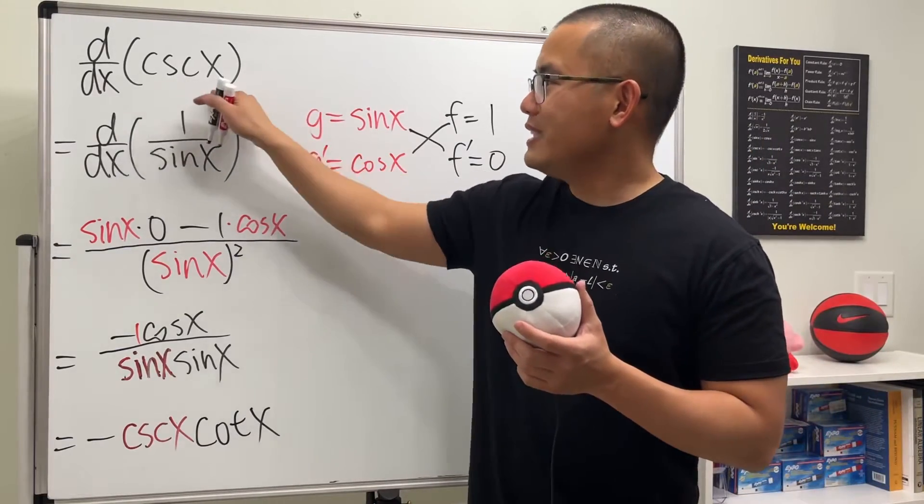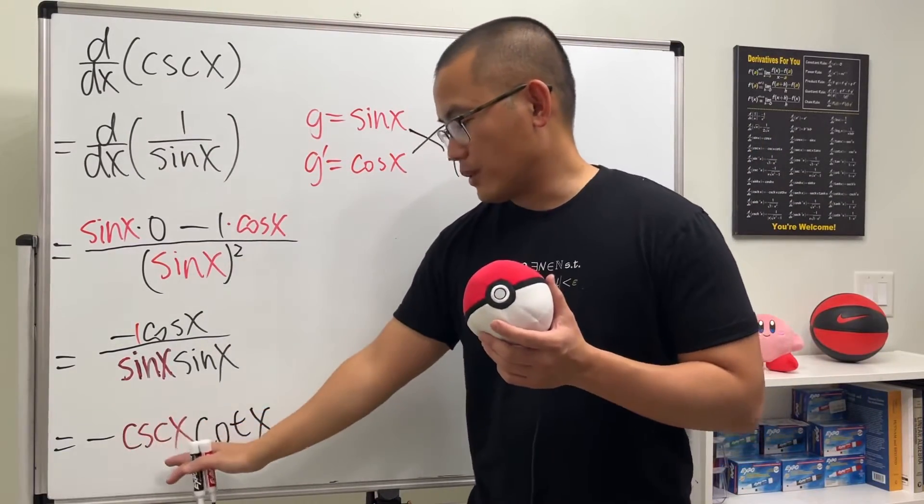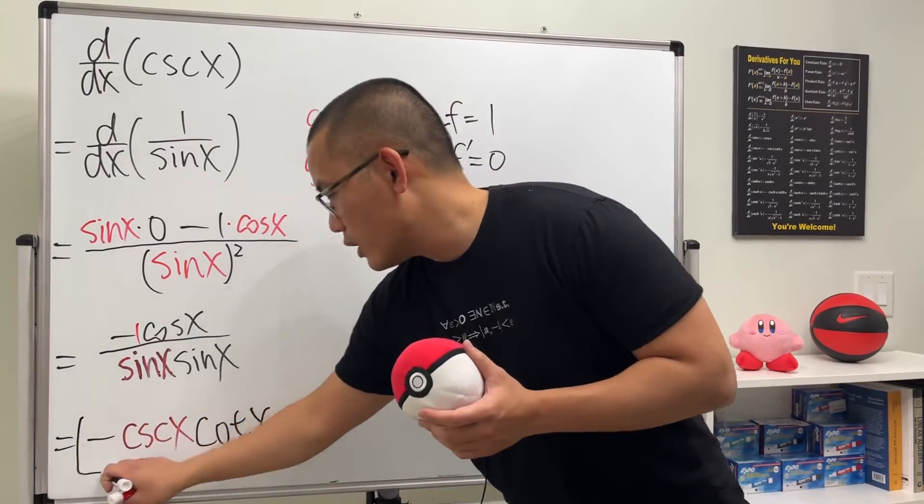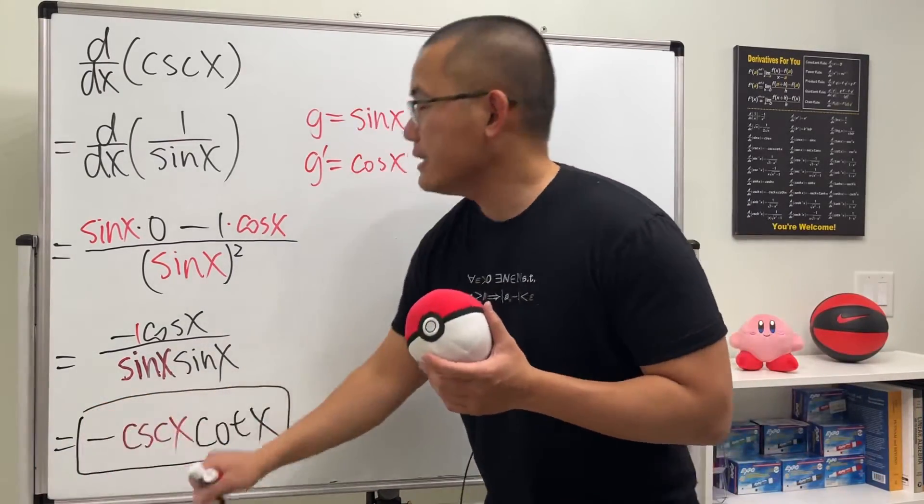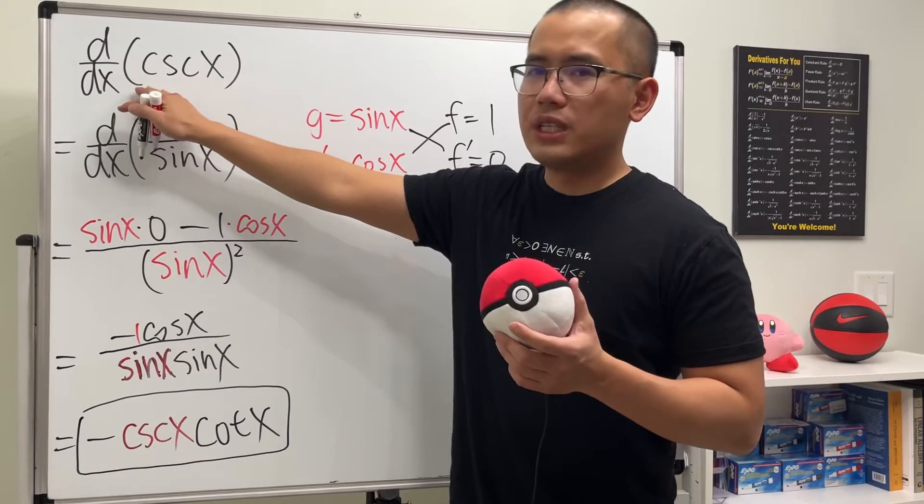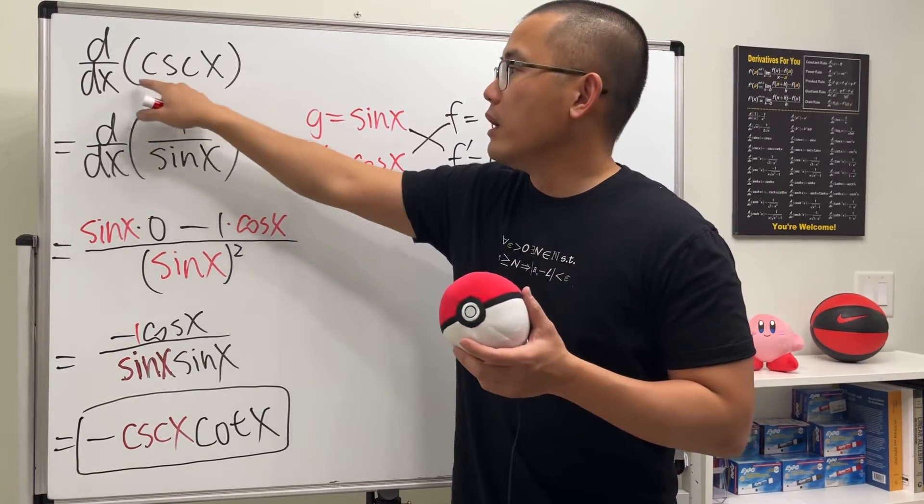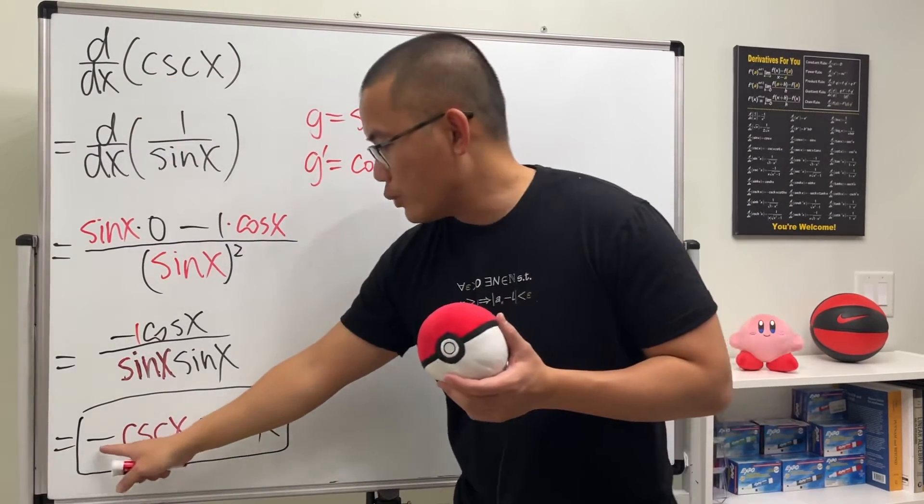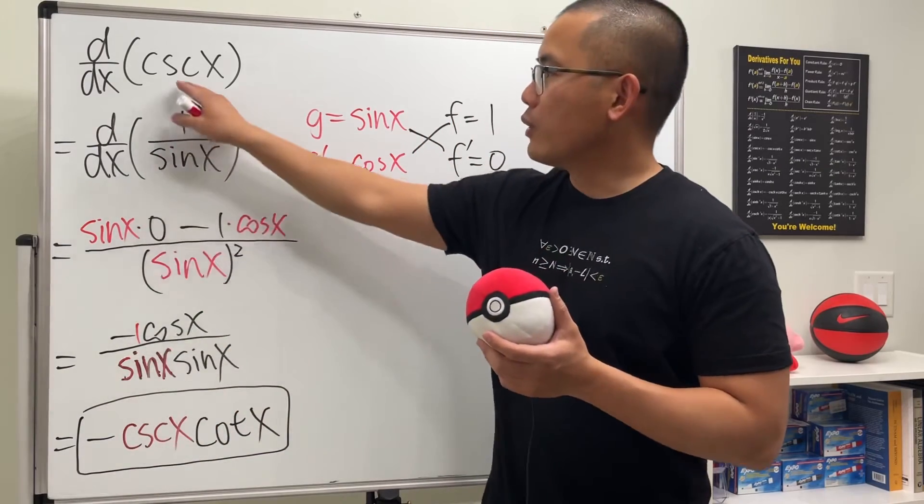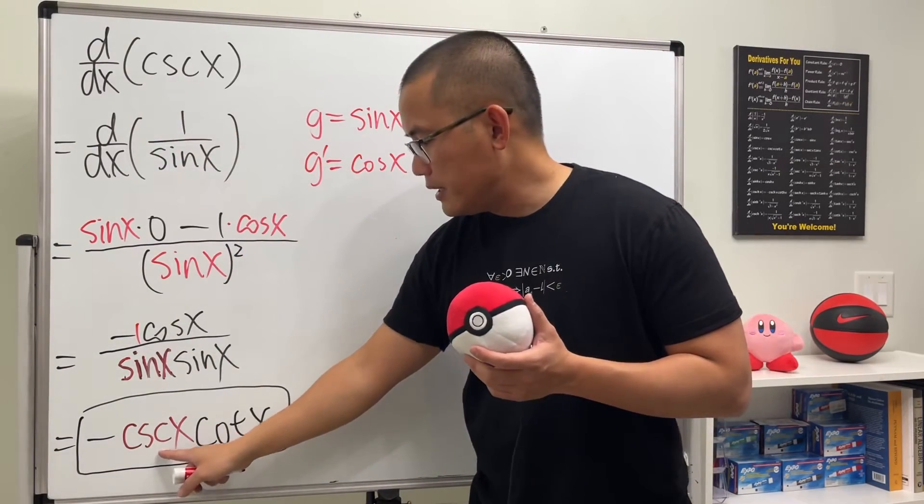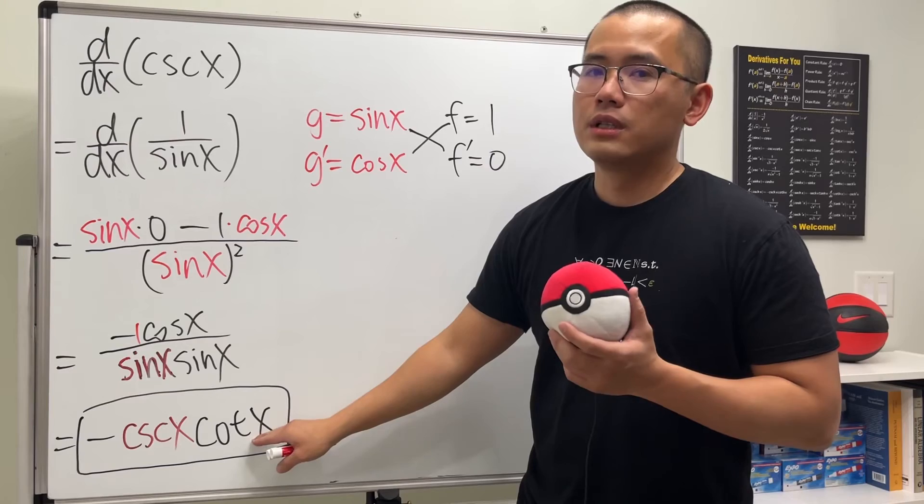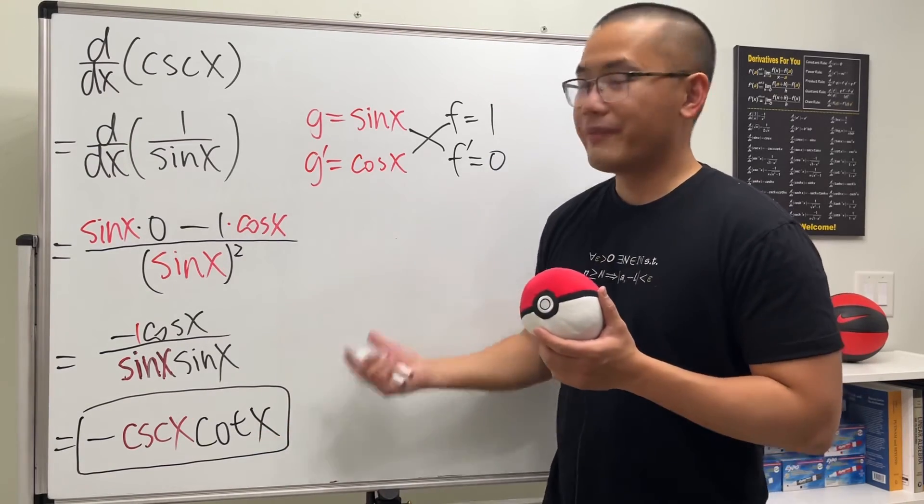One way to remember this is that when we are taking the derivative of regular trig functions, the ones that have 'c' in them will have negative derivatives. And for cosecant, you first repeat that, and then you pair that up with cot x. Okay, so that's it.